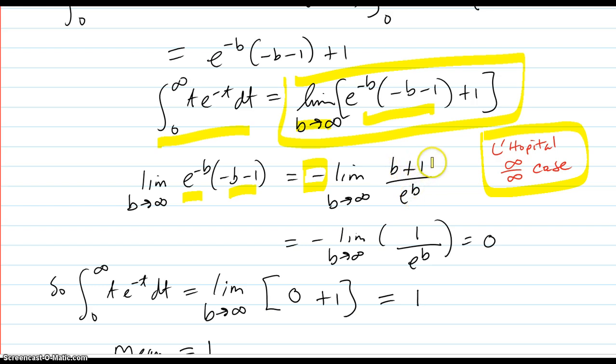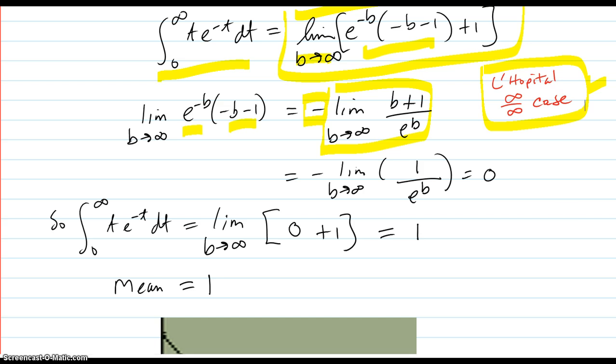So now you have b plus 1 over this, and this part right here is the infinity over infinity case. We take the derivative of b plus 1, which is 1, and e^b is e^b. If b goes to infinity, that definitely goes to zero.